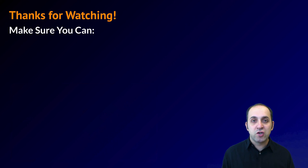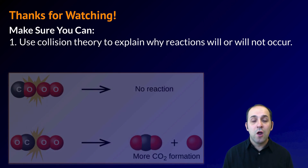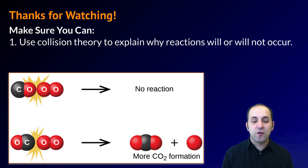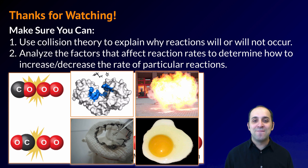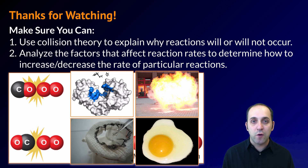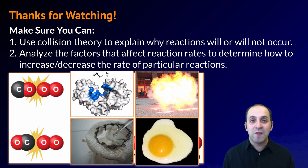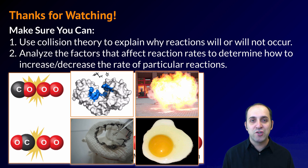Thanks so much for watching our discussion of collision theory and how we affect the rate of a reaction. Make sure you can use collision theory to explain why a reaction will or will not occur when reactants come into contact with each other. Also make sure that you can analyze the factors that affect reaction rates to determine how to increase or decrease the rate of a particular reaction. If you can do those things, you're doing great. If not, that's okay too — take a moment and write down any questions you have. You can always leave them in the comments below the video, and you can always get in touch with me. Thanks again for watching, and have a great day.